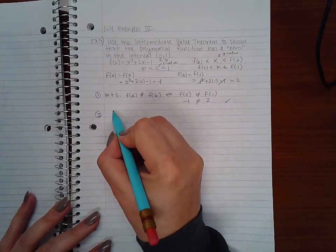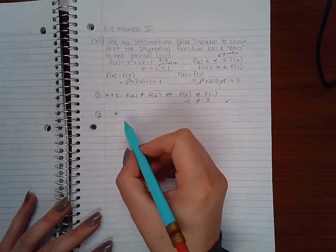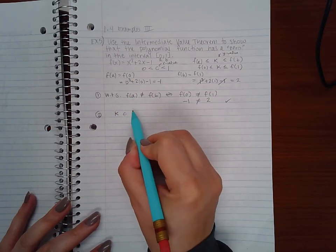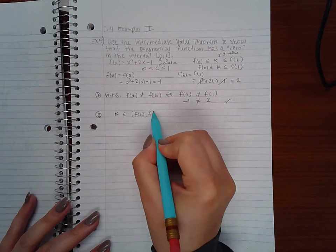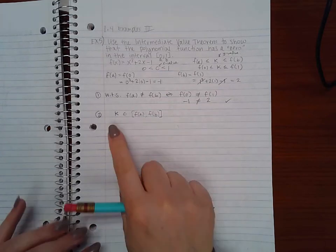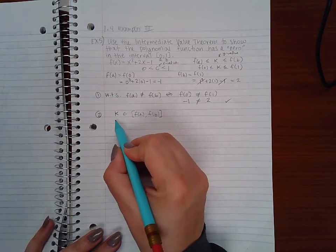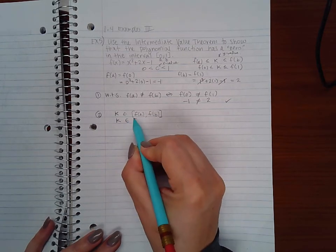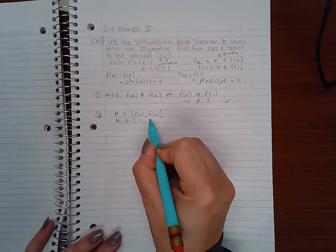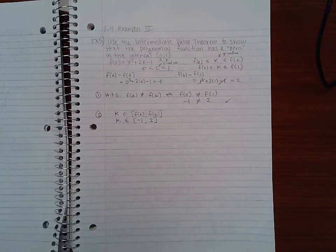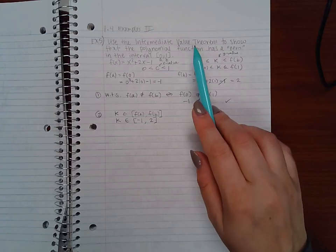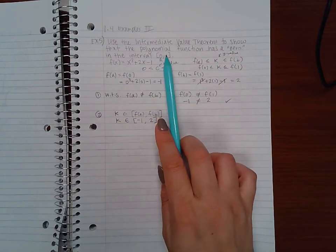The second criteria is that your k value has to be within f(a) and f(b). So your k value has to exist within these two y values. So the k value here has to be between negative 1 and 2, because that's what I got for f(a) and f(b).